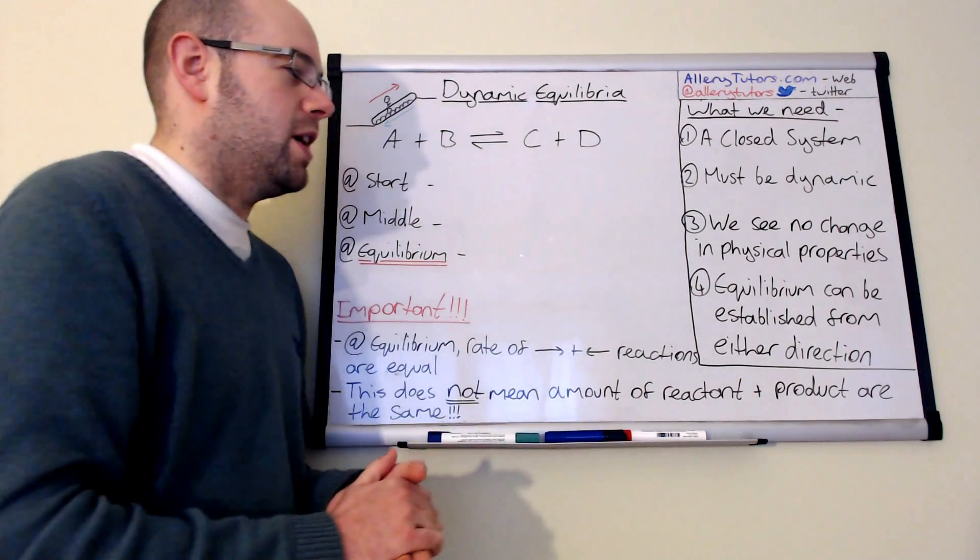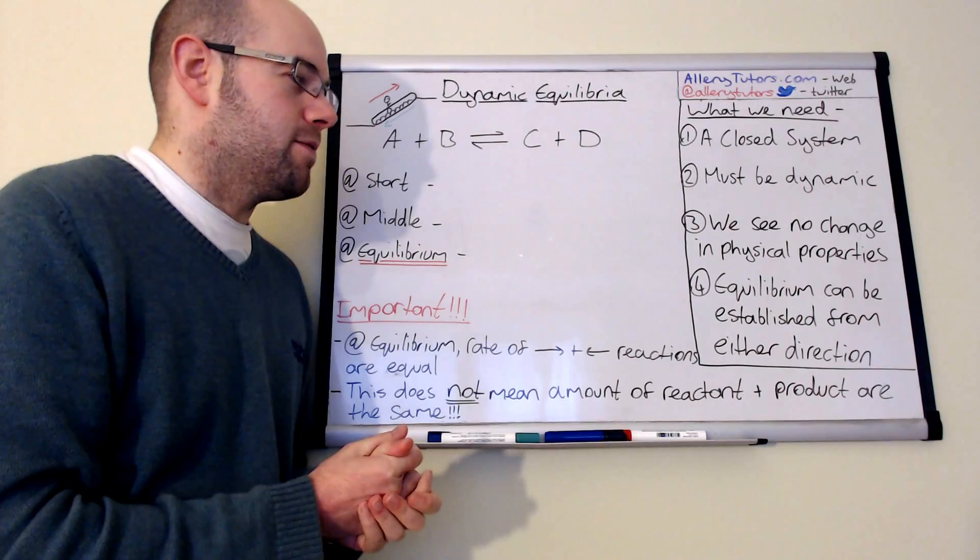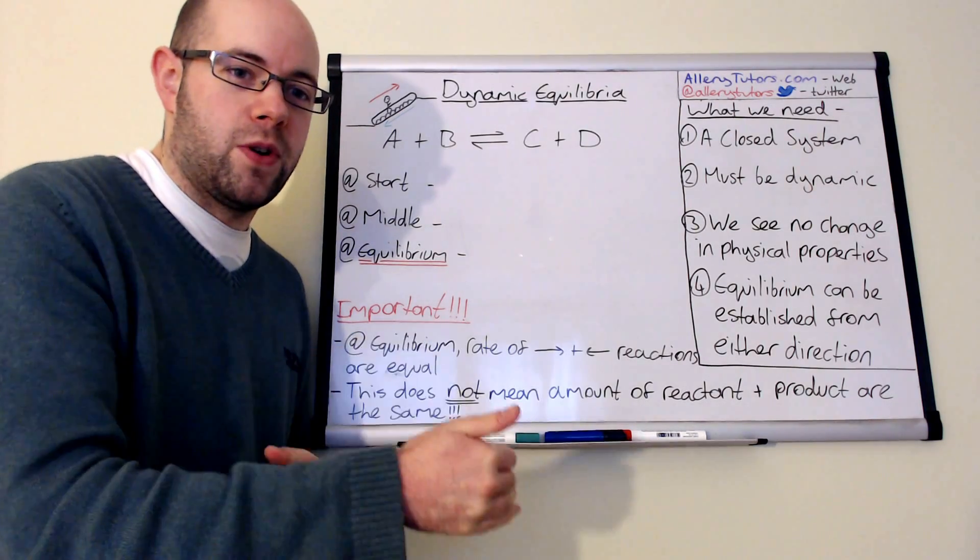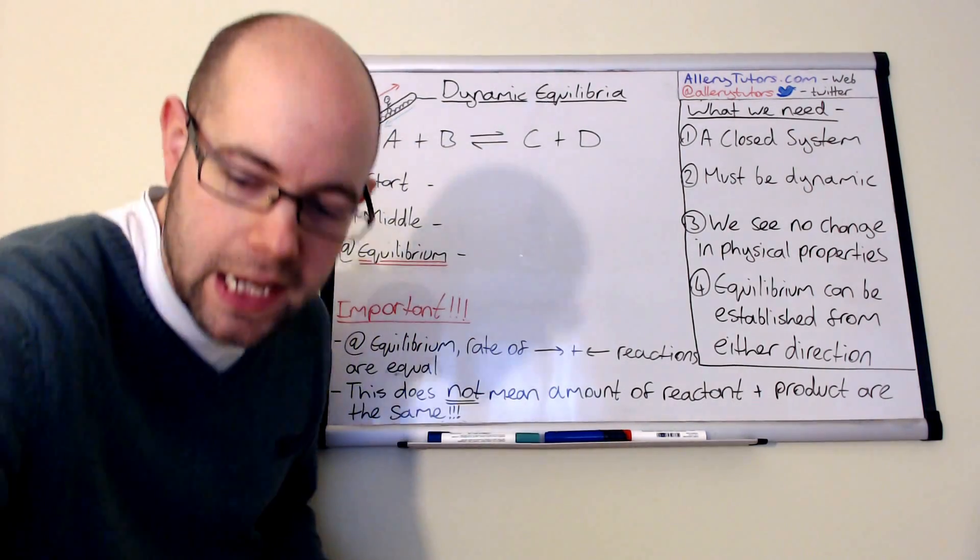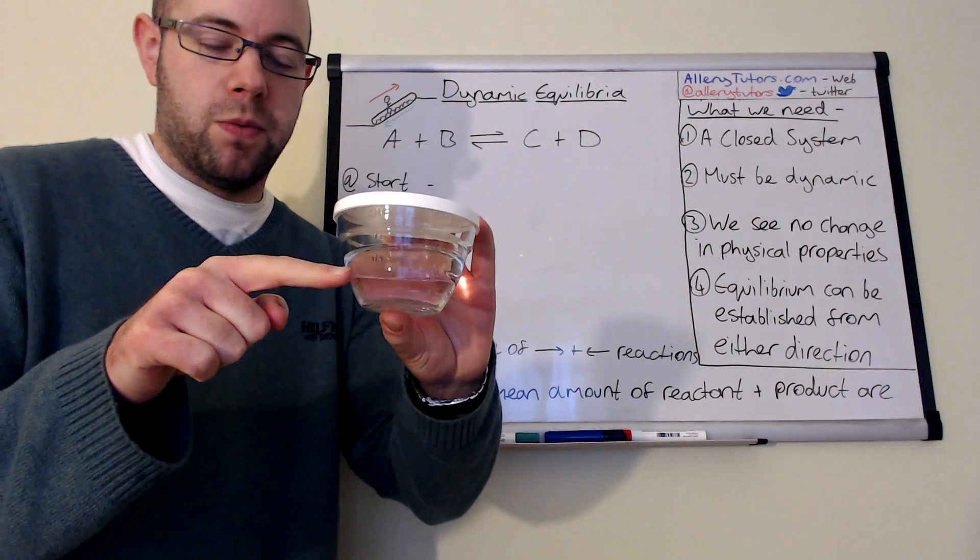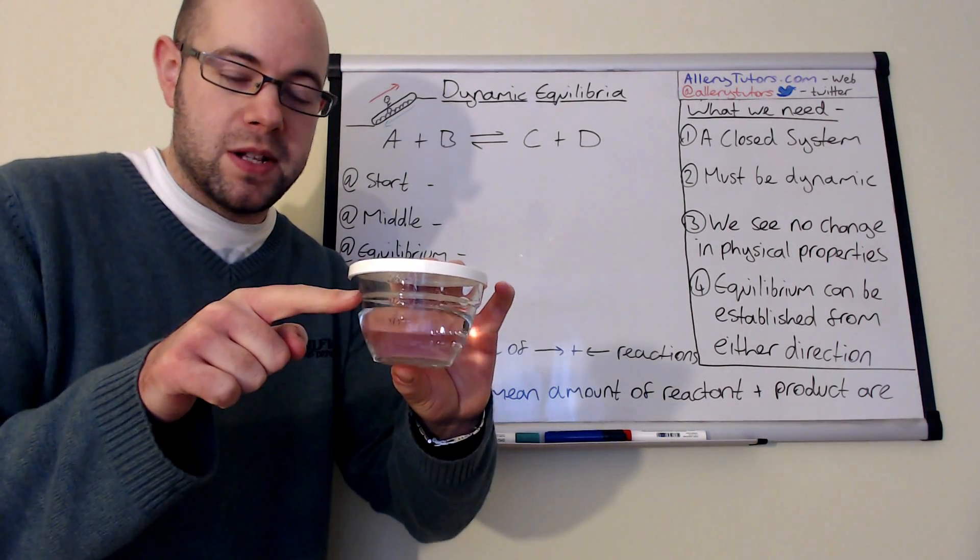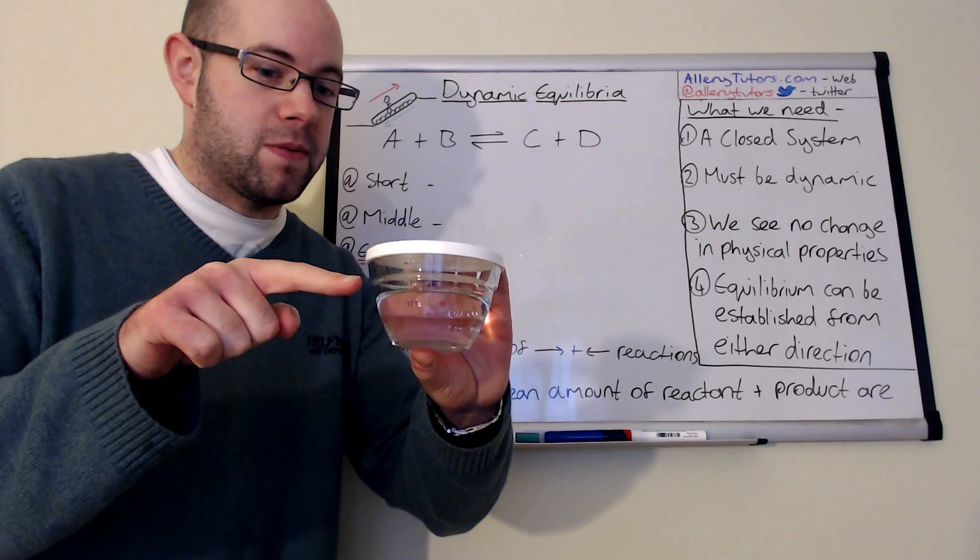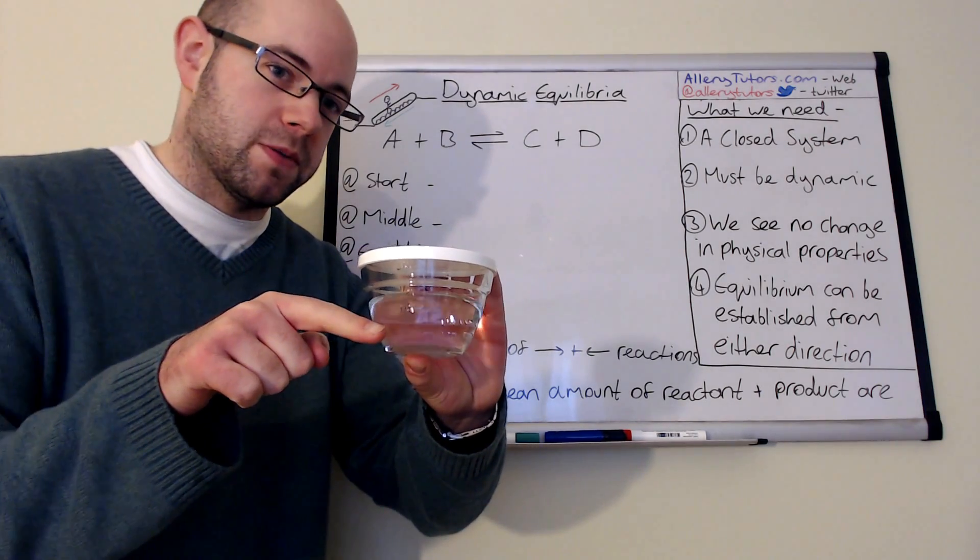And the last one is equilibrium can be established from either direction. So either the forward or the backwards direction. In this particular example here, we use the equilibrium of water and liquid going into vapor, but equilibrium could be established from vapor going back into a liquid as well.